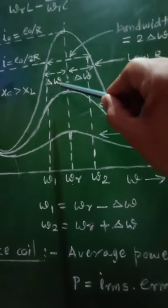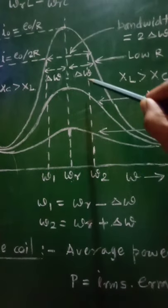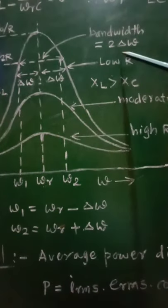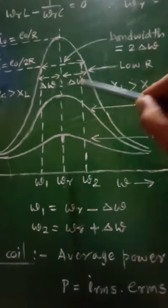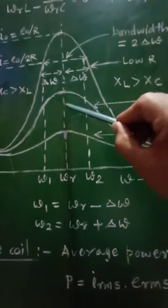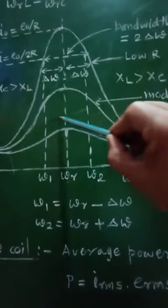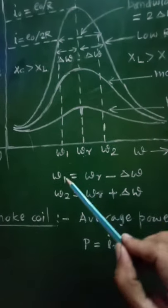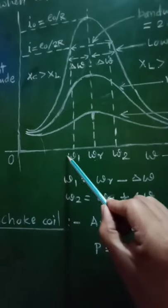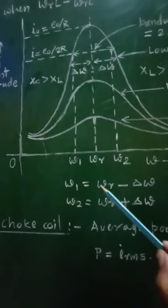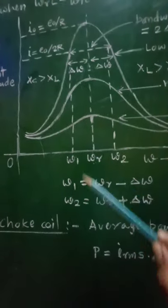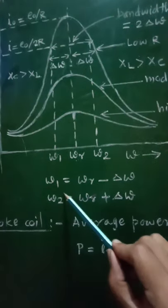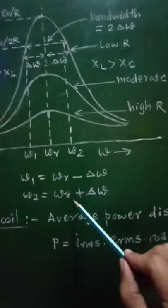Considering two frequencies ω₁ and ω₂, the difference ω₂ − ω₁ equals 2Δω, which is called the bandwidth. The difference between ω₁ and ωᵣ is Δω, and similarly between ω₂ and ωᵣ is also Δω. Therefore ω₁ = ωᵣ − Δω and ω₂ = ωᵣ + Δω.